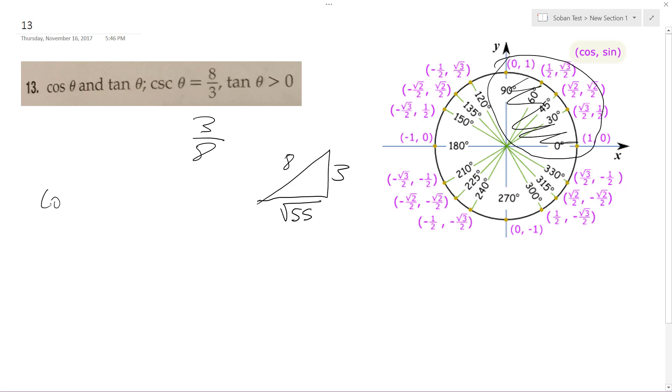So cosine is going to be equal to square root of 55 over 8. And then tangent of theta, which is opposite over adjacent, equals 3 over square root of 55, or 3 root 55 over 55.